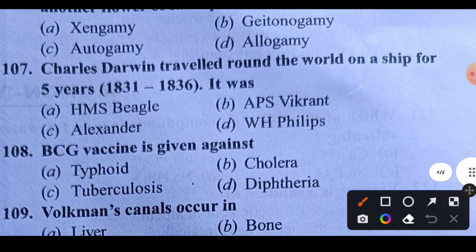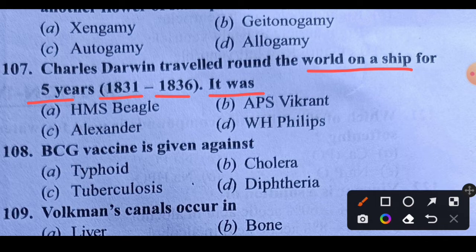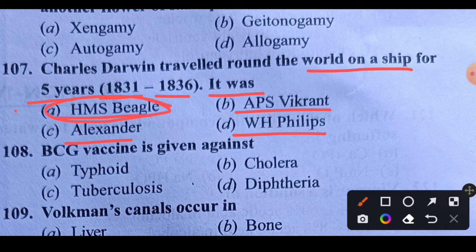Question 107: Charles Darwin traveled around the world on a ship for 5 years. What was the name of that ship? Options: HMS Beagle, Apius Vikrant, Alexander, or W.H. Phillips. The name of the ship was HMS Beagle. Option A is the right answer.